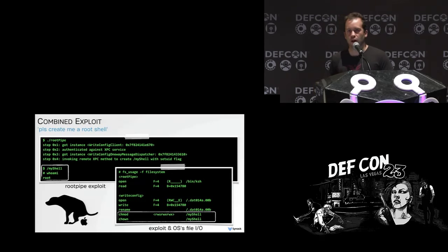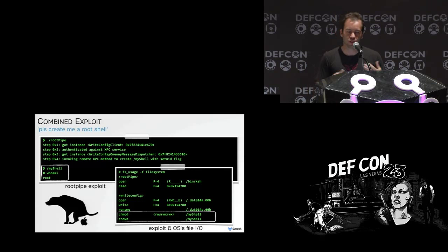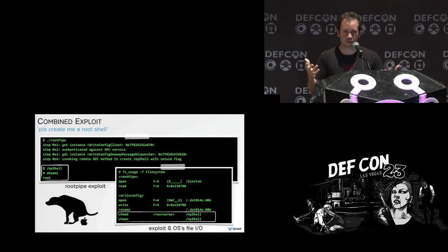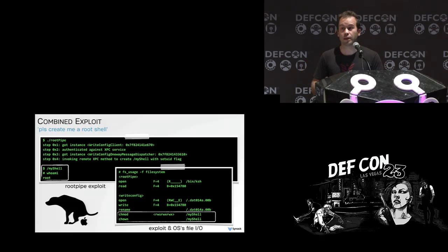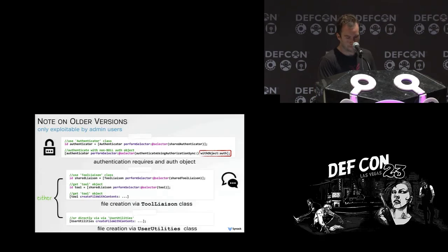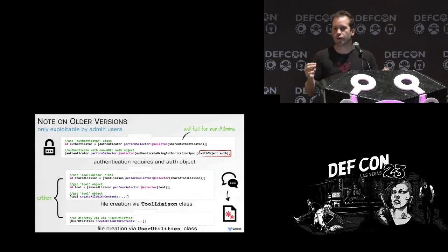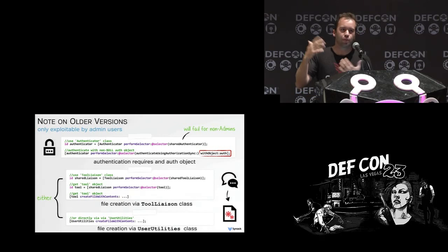If we execute this and monitor at the file level using FS usage, we can see our application triggering the exploit and making a copy of the shell. We use KSH because it allows itself to be run as root. We can see writeconfig — the remote XPC component — creating a copy of that file and then chmodding and chowning it so it has the SUID bit set. On older versions you need to be an administrator, but the default user on OSX has these privileges, so it's still a privilege escalation — it allows an attacker to get root without having to specify a username and password.